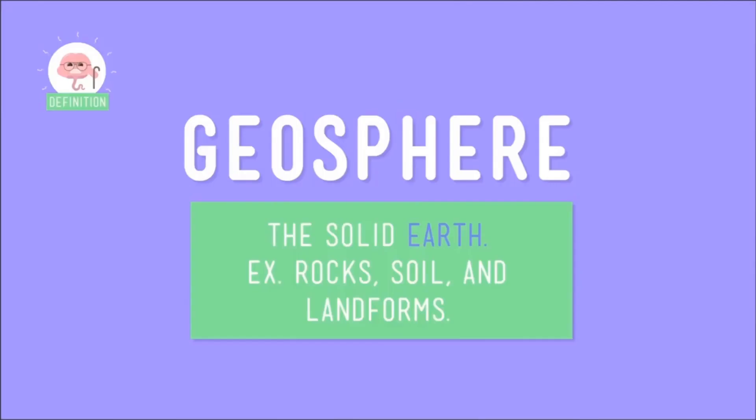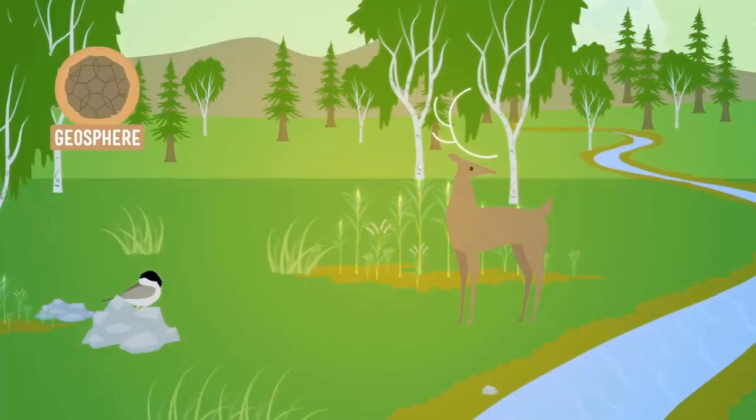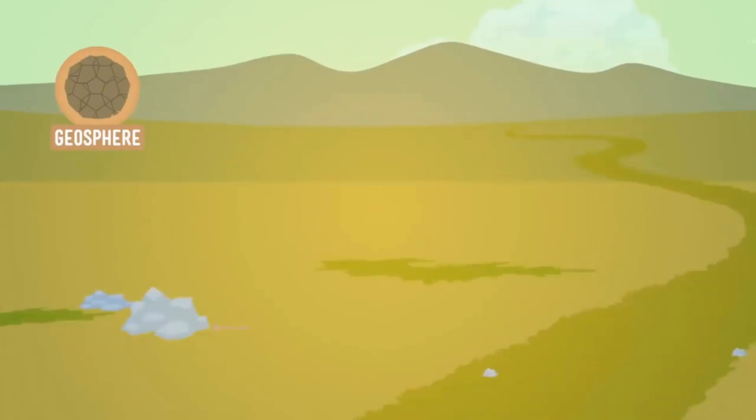As we know, there is nothing alive in geosphere, so all the plants and animals are removed and the water is also removed. As we know, water counts in hydrosphere. So the rock, soil, mountain, and the bed where the stream water flows through belongs to geosphere.